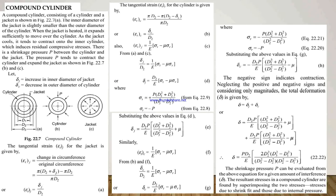When the jacket is heated, it expands sufficiently to move over the cylinder. As the jacket cools, it tends to contract onto the inner cylinder, which induces residual compressive stresses. There is a shrinkage pressure P between the cylinder and the jacket. The pressure P tends to contract the cylinder and expand the jacket. Delta_J is the increase in the inner diameter of the jacket and delta_C is the decrease in the outer diameter of the cylinder.